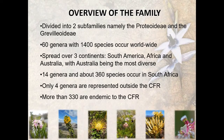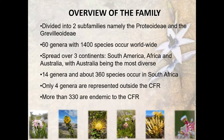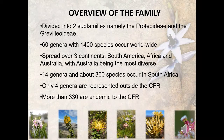In South Africa we have 14 genera and about 360 species. Only four of these 14 genera are represented outside the Cape Floristic Region, and more than 330 of the other Proteaceae species in South Africa are endemic to the CFR, which means they only occur in the Cape Floristic Region.